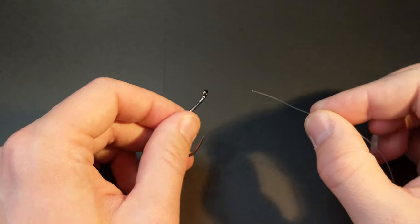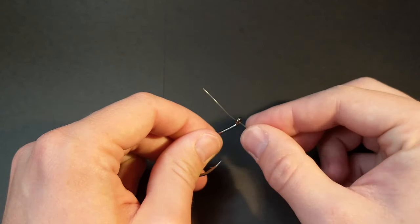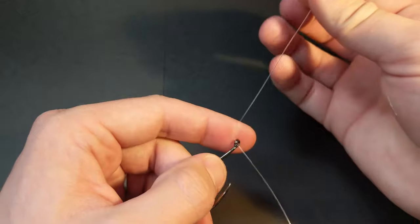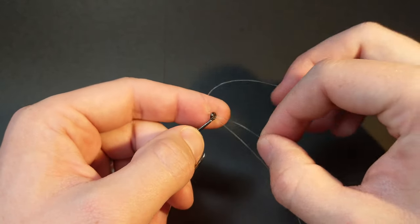To start, take your leader, put it through the eye of your hook once, pull out some tag end, and then loop it back through the same way.